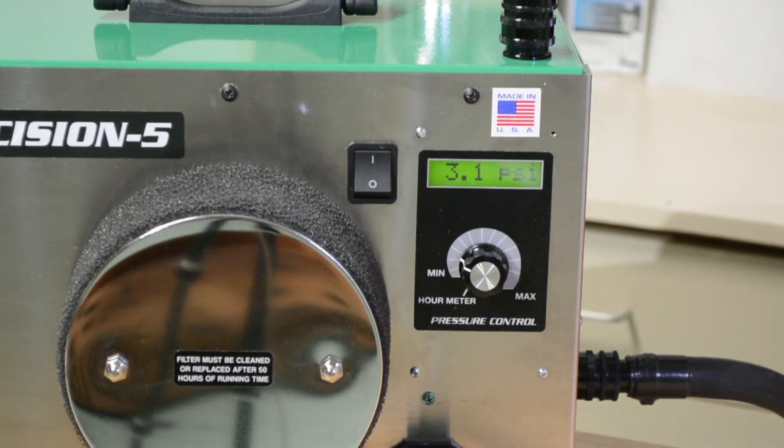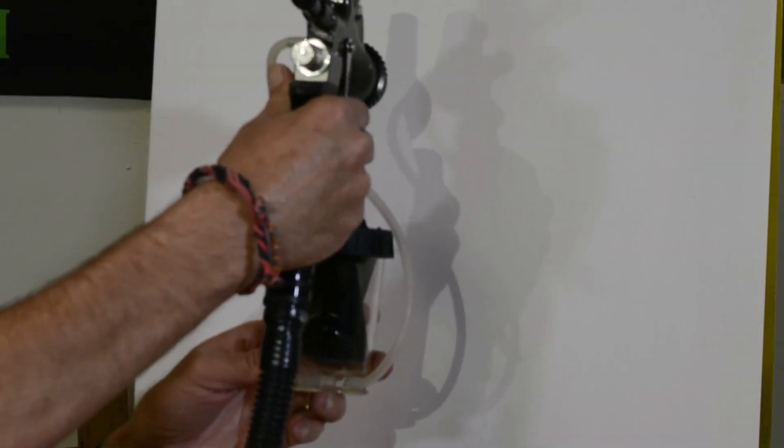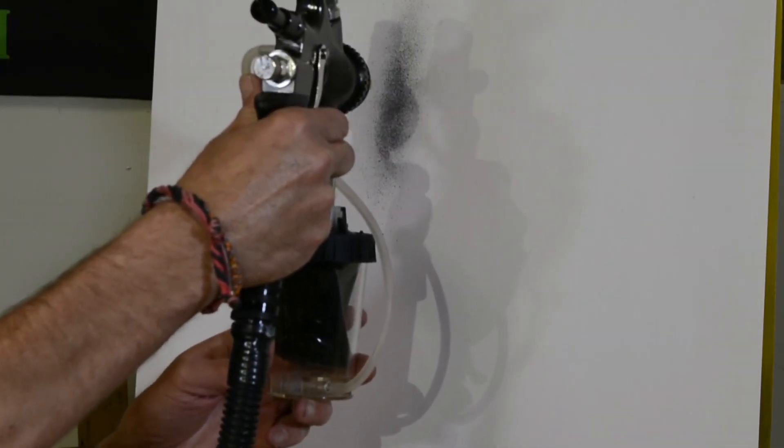So we've raised it to three psi. Let's give it another spray. It's gotten a little better, but we still have quite a bit of uneven particle sizes. So let's go back to the machine and we'll raise it another half a psi.